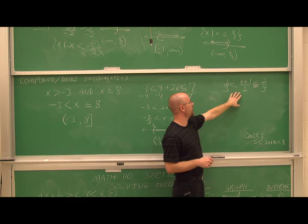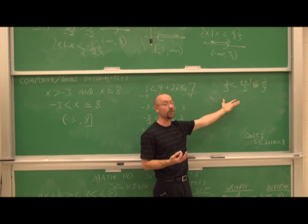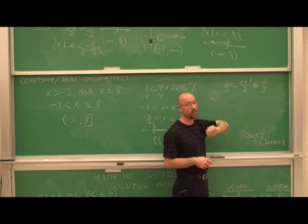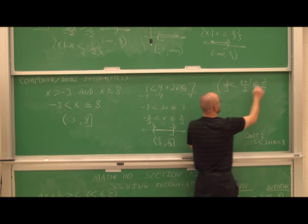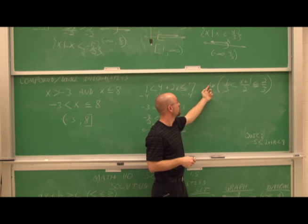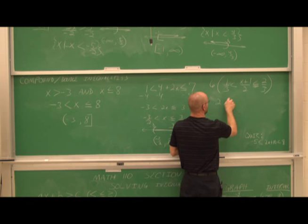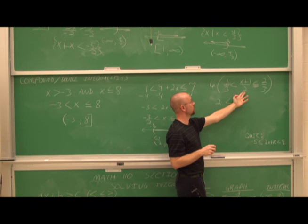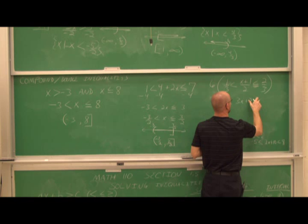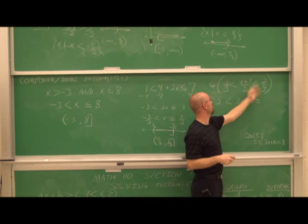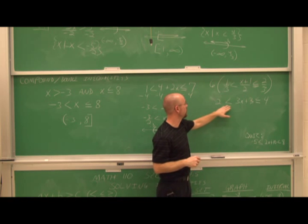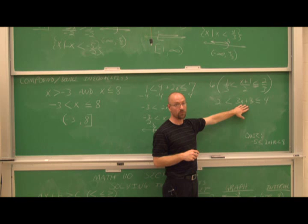What if we have rational expressions — fractions? Just as with equations, we can clear fractions by multiplying through by the LCD. With denominators of 3 and 2, the LCD is 6. Multiplying all terms by 6: 6 times one-third is 2; 6 over 2 is 3, so distribute 3 to that quantity; 6 divided by 3 is 2, times the numerator is 4. Now we have a compound inequality with no fractions.